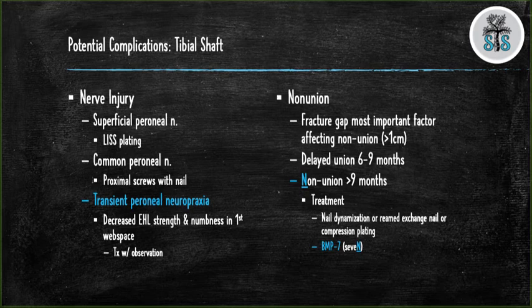A union is defined as no pain or tenderness at the fracture site and at least three of the four cortices bridged with bone, or more simply, if the patient can weight bear without pain at the fracture site.